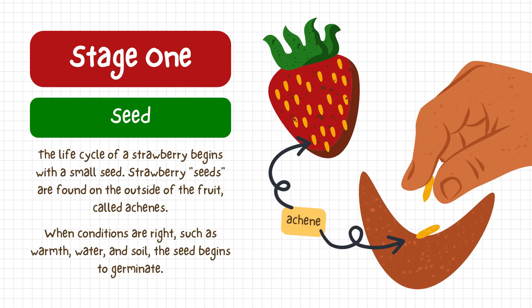Stage one is the seed. The life cycle of a strawberry begins with a small seed. Strawberry seeds are found on the outside of the fruit, called achene. When conditions are right, such as warmth, water, and soil, the seeds begin to germinate.